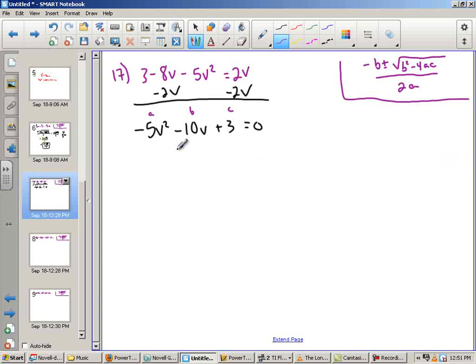So as I go to put this in the quadratic formula, the opposite or negative of B is positive 10, plus or minus the square root of negative 10 squared is 100. 10 times 10, or negative 10 times negative 10 is still 100, minus 4 times negative 5 times 3, all divided by 2 times negative 5. That's negative 10.